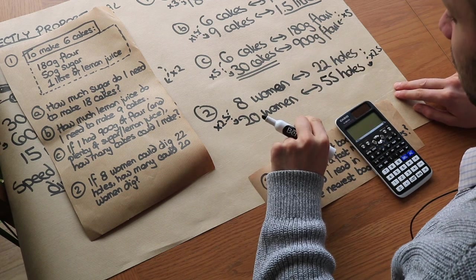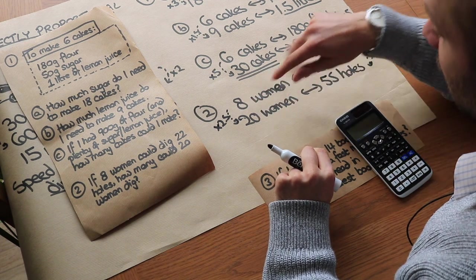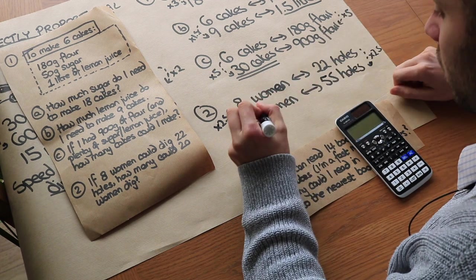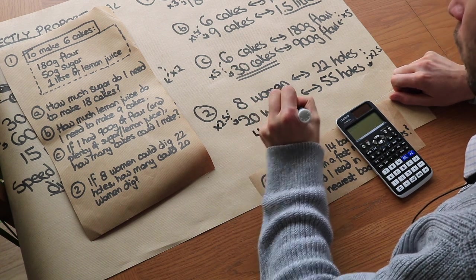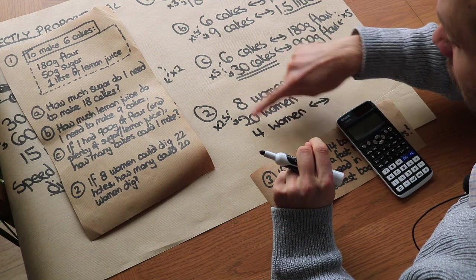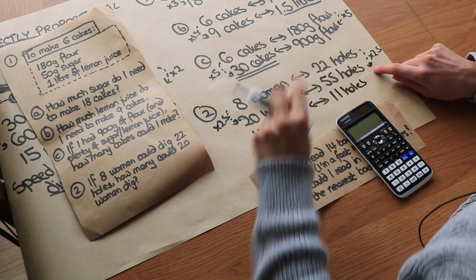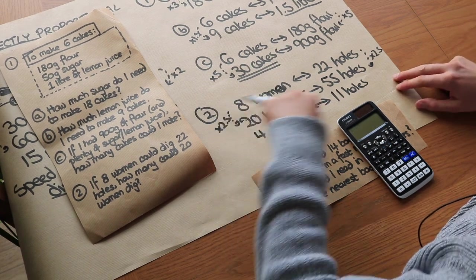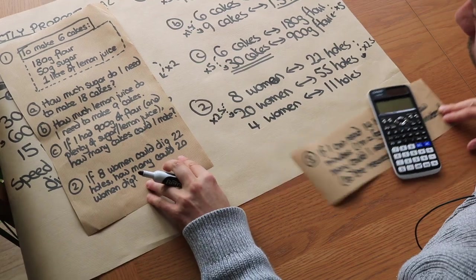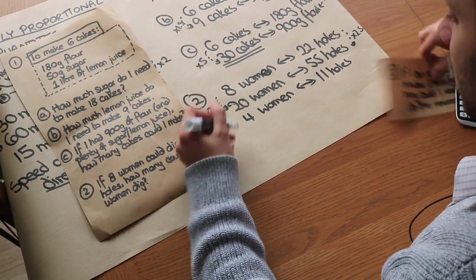And again, if you want to avoid having to use decimals, you can see a common factor to 8 and 20, so they both have a common factor 4. So what you could have done is you could have first worked out what four women could dig, and that is half as many women, so half as many holes, i.e. 11 holes. And then to get from four women to 20 women, you're just timesing by 5. 11 times 5 is 55, so that might be a bit easier if you want to avoid decimals.